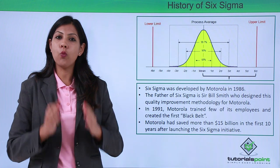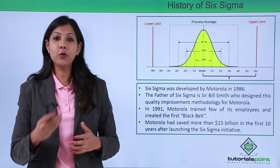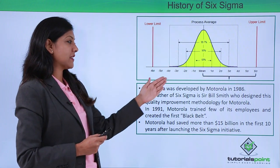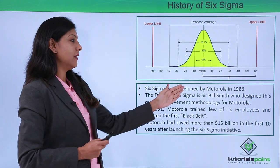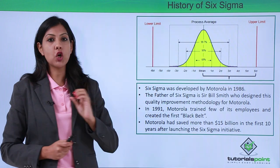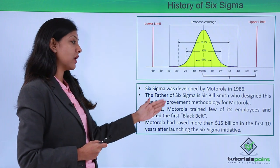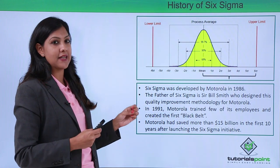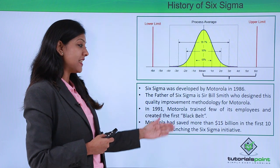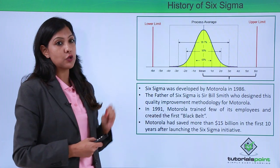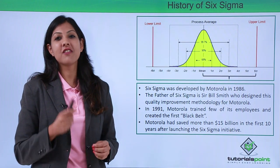Let's look at the history of Six Sigma — when it started and who started it. Six Sigma was developed in 1986 by Motorola. The father of Six Sigma is Sir Bill Smith, who designed the quality improvement methodology for Motorola. In 1991, Motorola trained a few of its employees who are now known as the first belt people. Motorola saved more than 15 billion dollars in the first 10 years after launching Six Sigma.